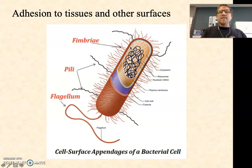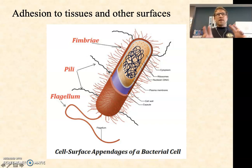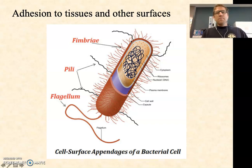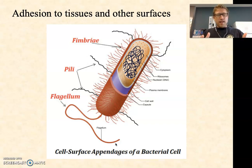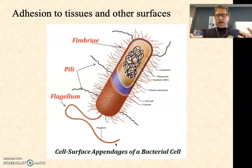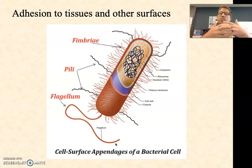Some common adhesins include fimbriae — discussed earlier in the semester — and pili, which are most commonly associated with the sex pili and conjugation pili of F-plasmids, but are also involved in specific adhesion. Flagella are often good adhesins as well; many bacteria use their flagella to attach very specifically to a tissue. These are cell surface appendages, mostly proteins, sometimes polysaccharides, or sometimes a glycoprotein, which is a combination of protein and polysaccharide.